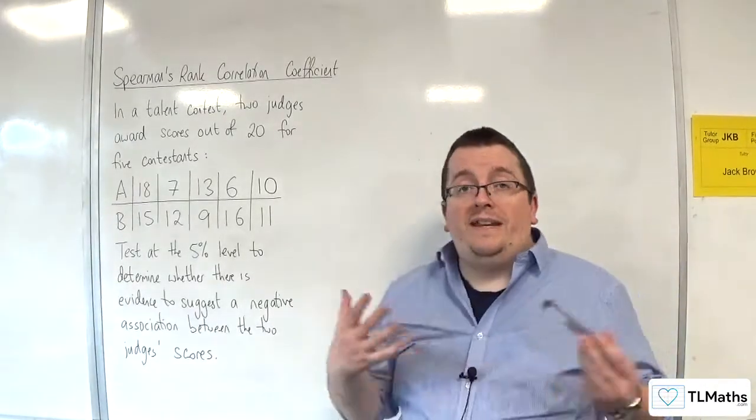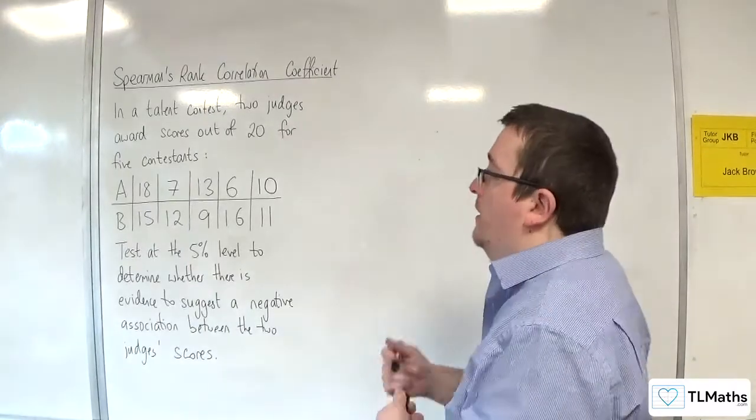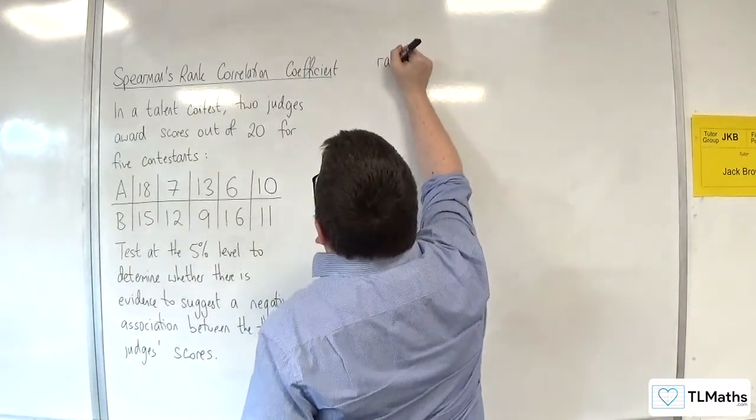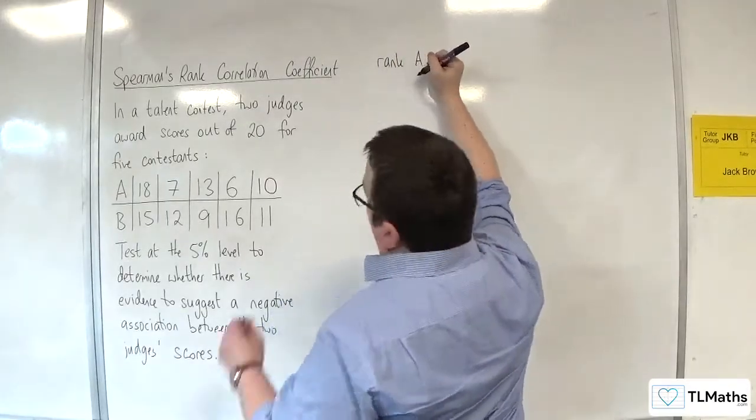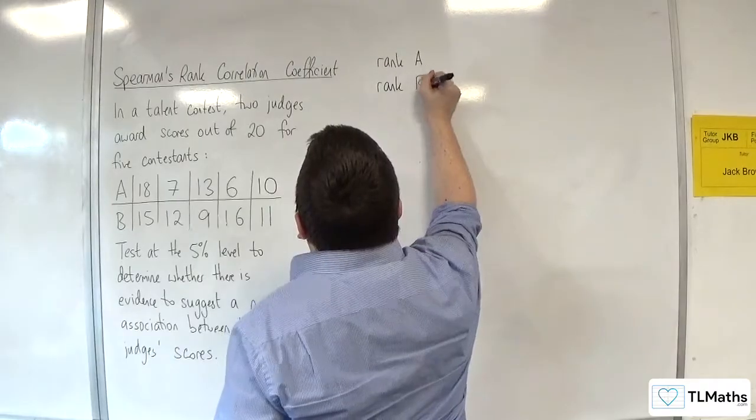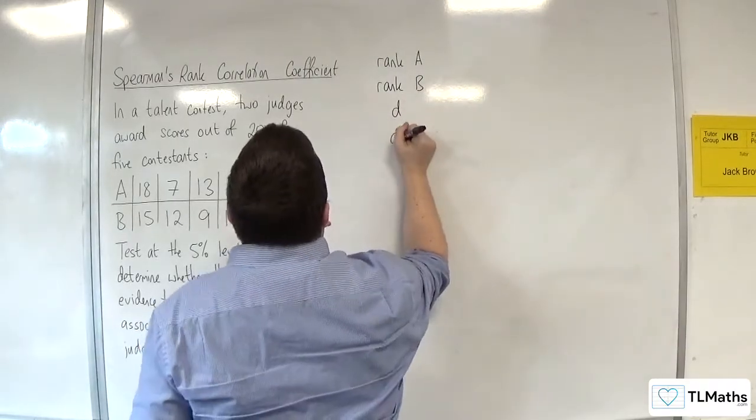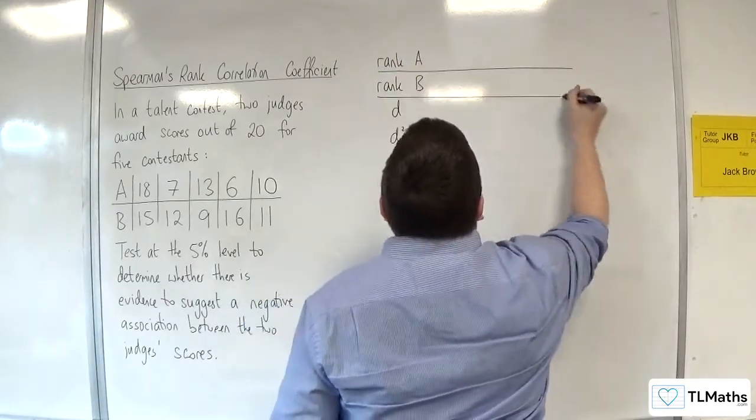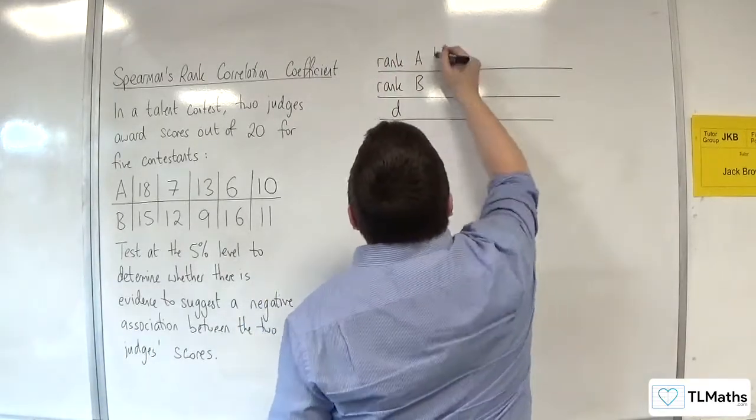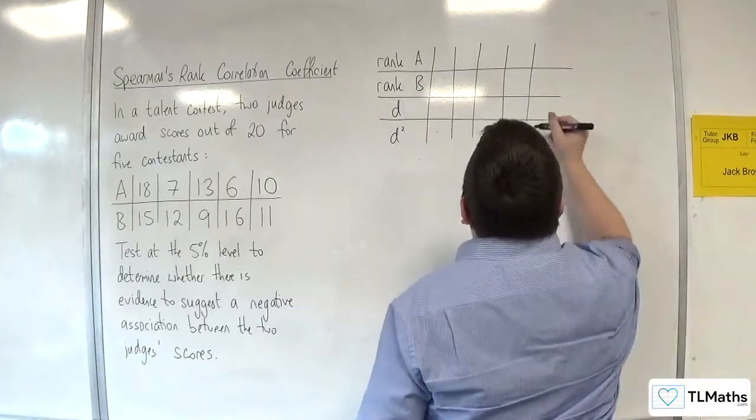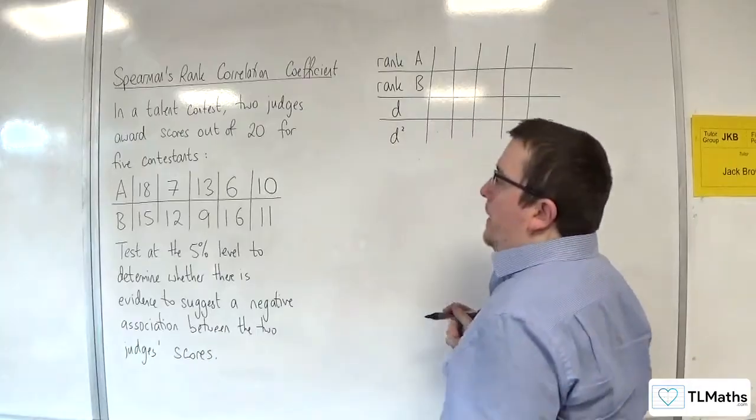Okay, so the first thing we need to do is calculate Spearman's rank correlation coefficient. So, we need to rank the scores of judge A, and then of judge B, and then we need to find the difference in the ranks, and then the difference squared. Okay. One, two, three, four, five. That gives me enough space.